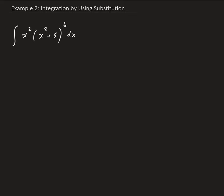We're going to let u be equal to x cubed plus 5. So we choose u to be the portion that's inside the parentheses. So we have u equals x cubed plus 5.